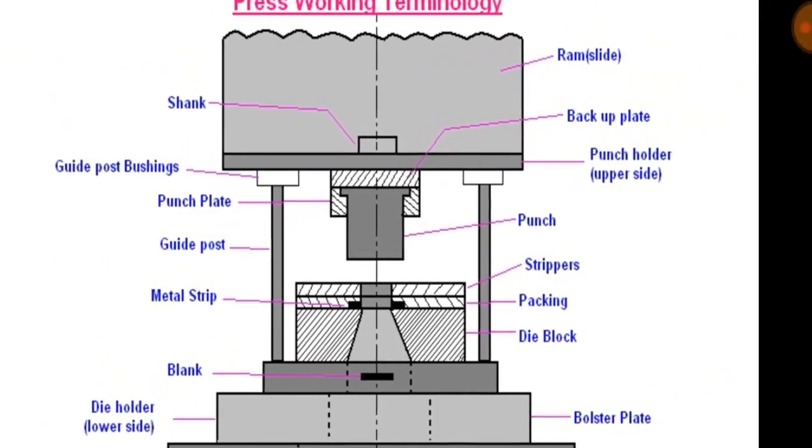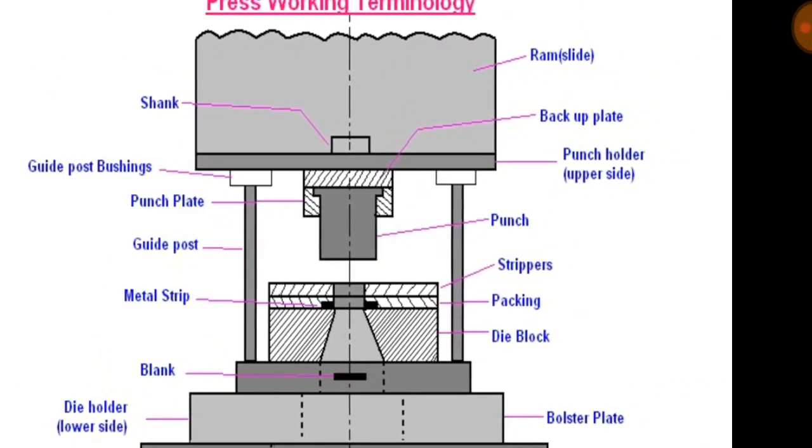Knockout: knockout is a mechanism usually connected to and operated by press ram for freeing a work piece from a die.